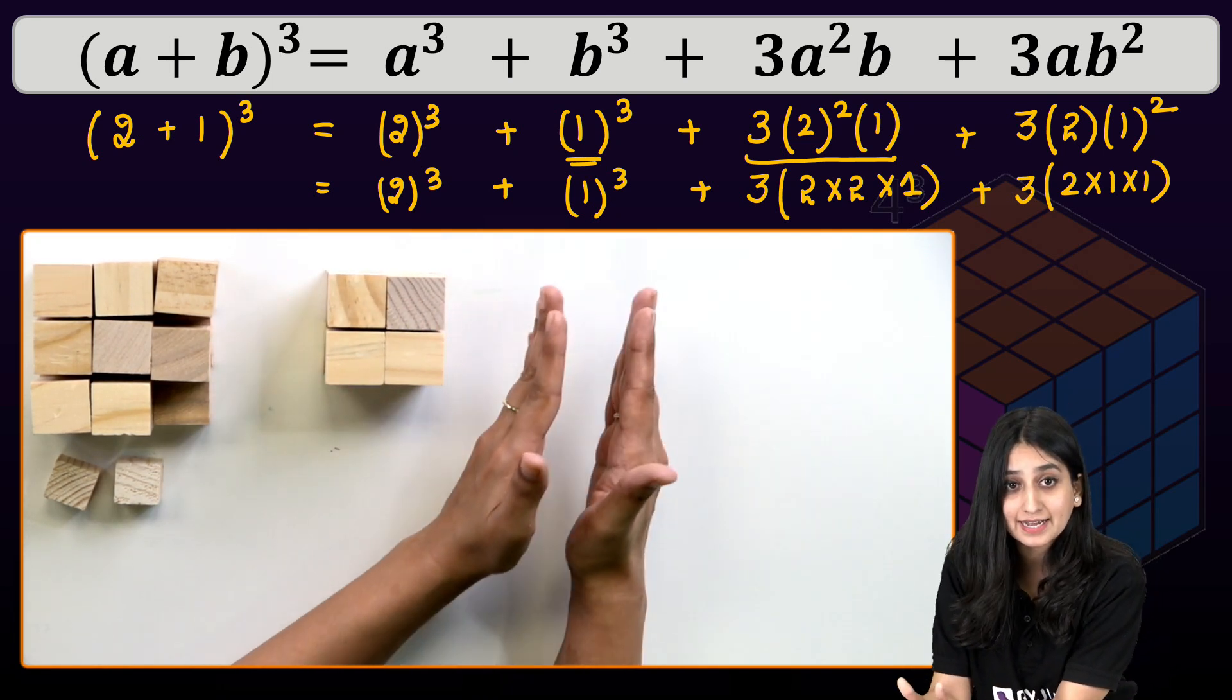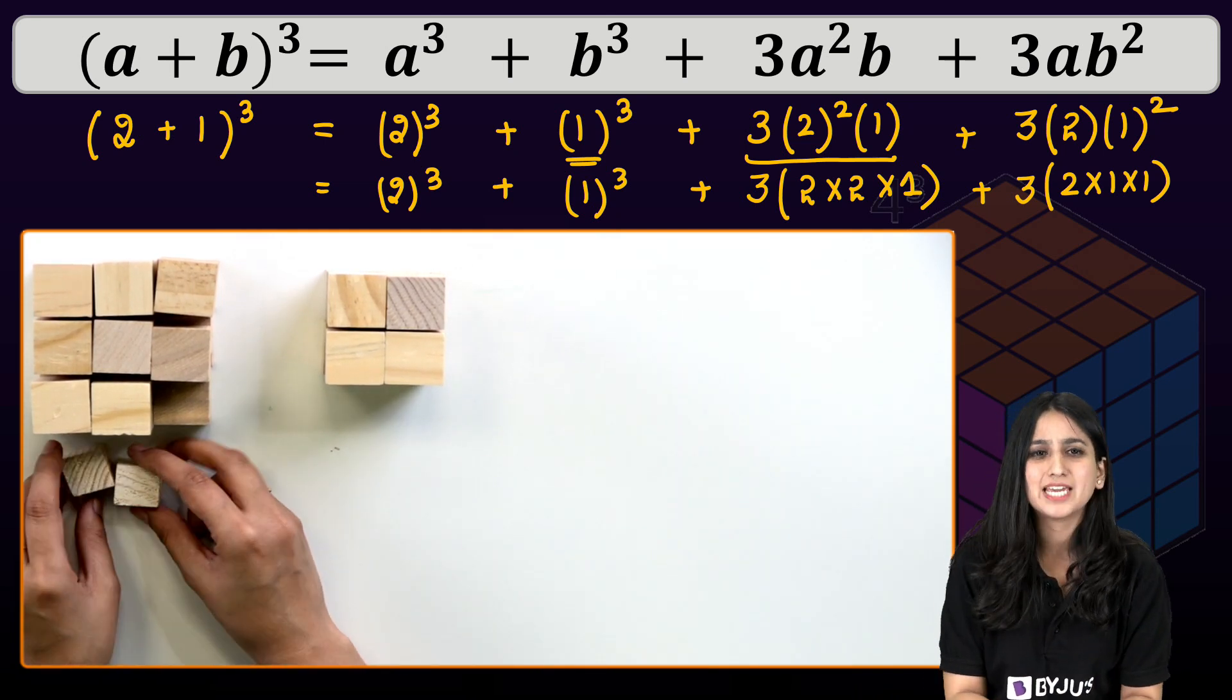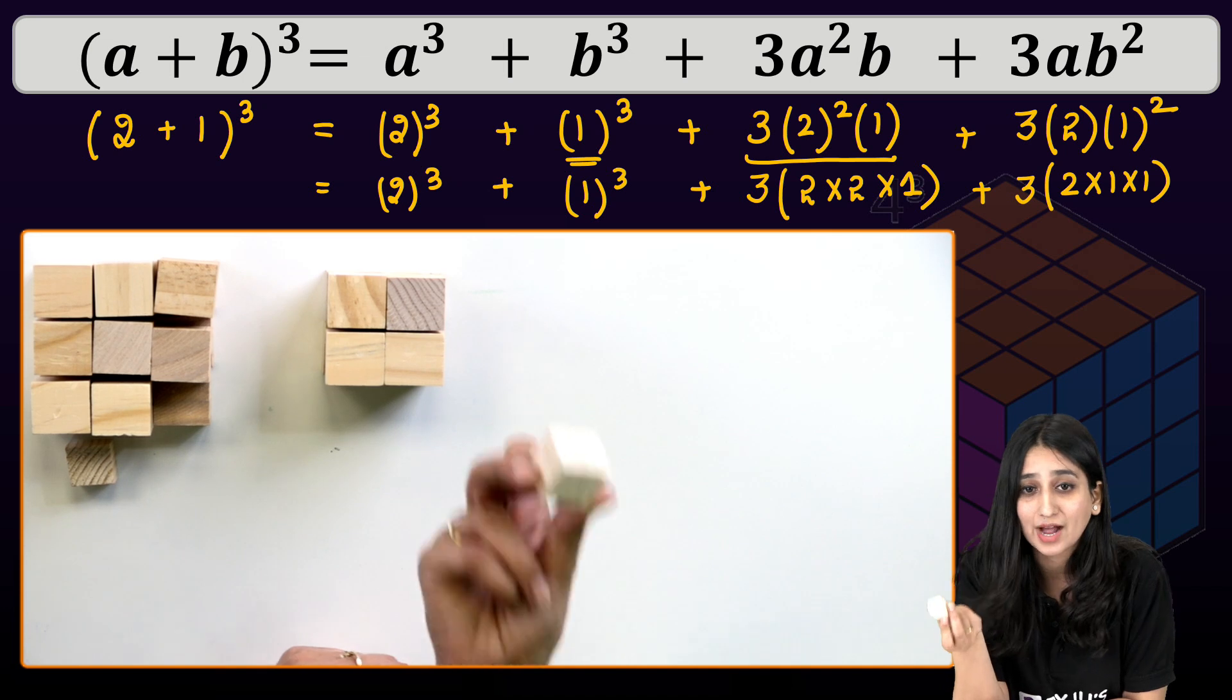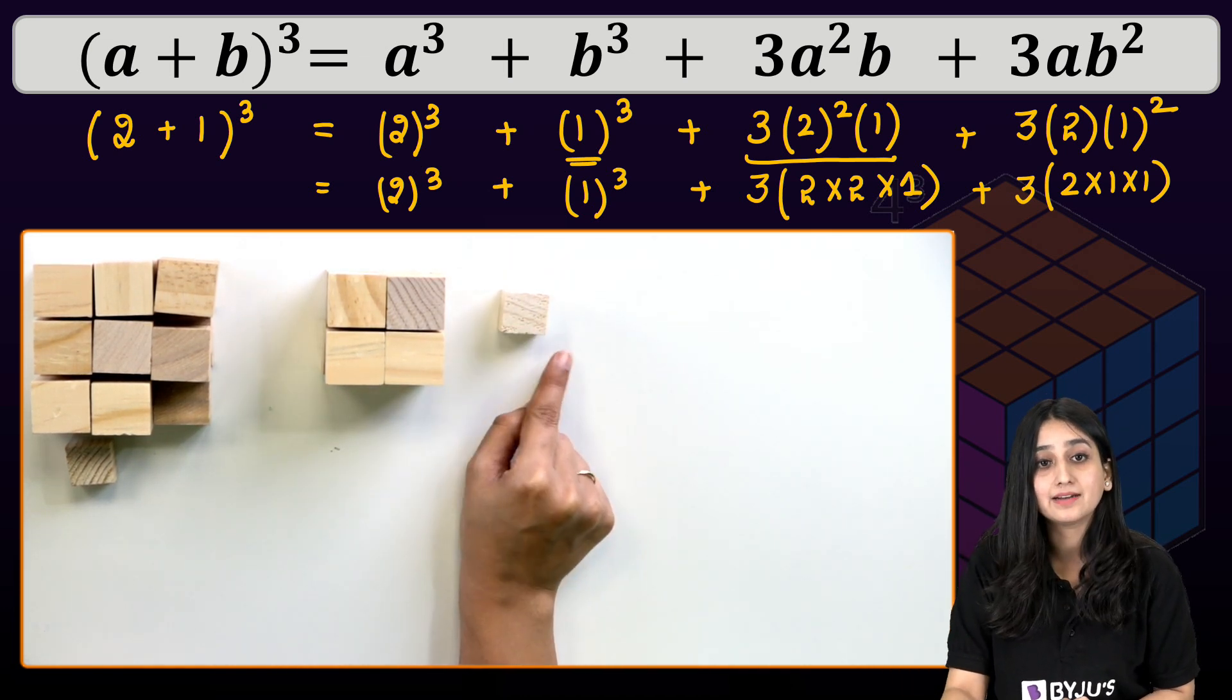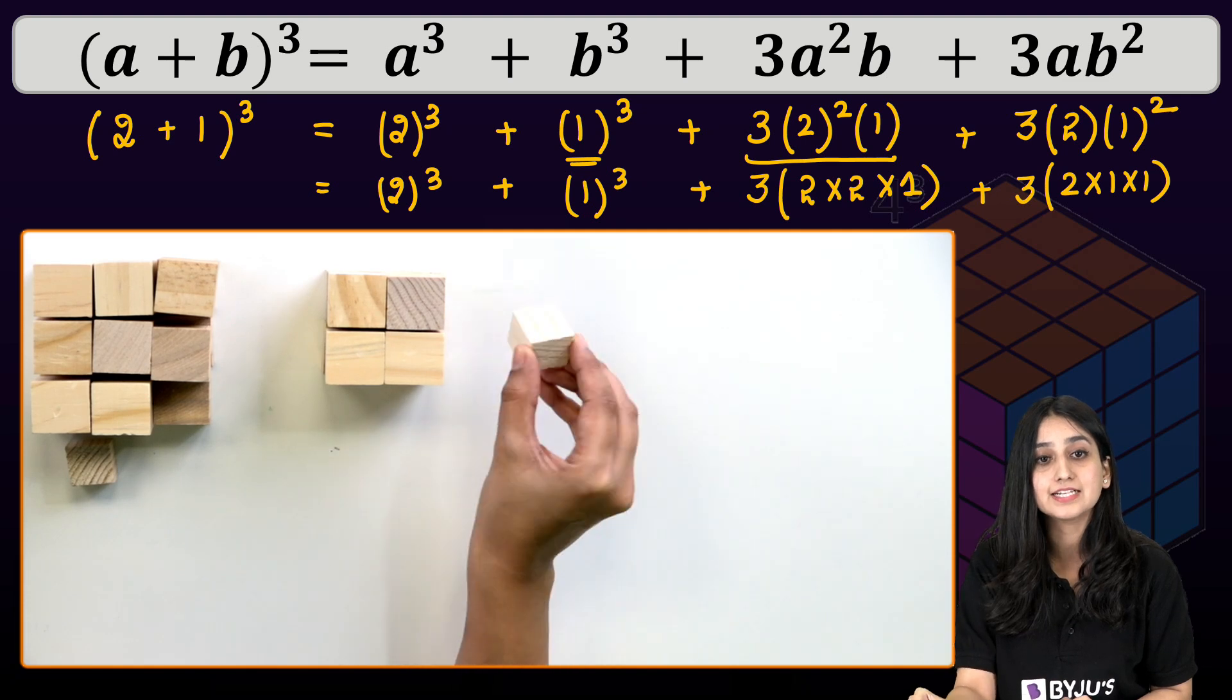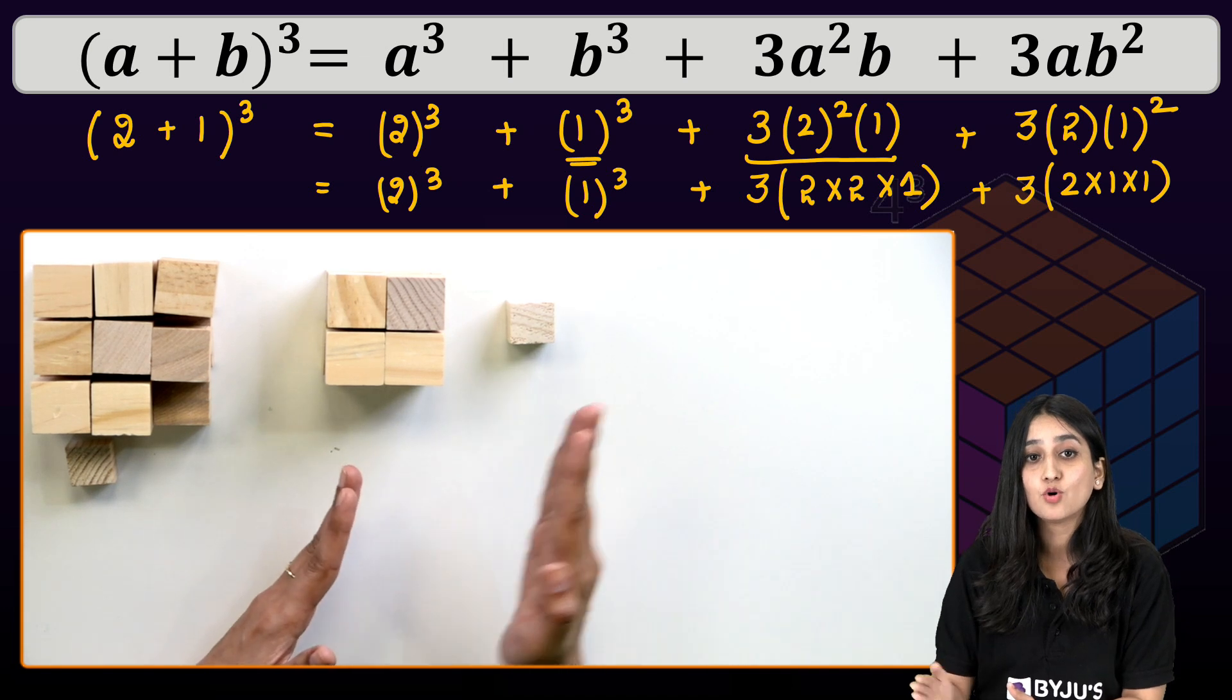Now let's move on to the next term, which is 1 cube. Now how will you represent 1 cube? Easy peasy ma'am. I will just pick 1 cube. And now this is my 1 cube. Because length, breadth and height is 1 only. So I will place it over here.